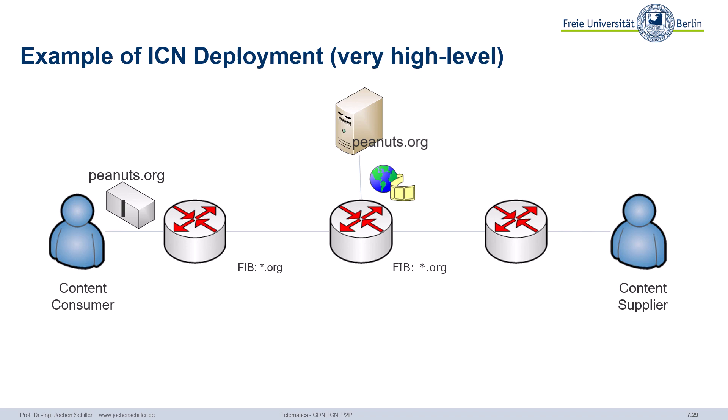These content routers know where to get the content, or which interface to use. So in our example, one router knows: I get the content here over this interface. Another router knows: if someone asks for 'whatever.org', use this interface. So the consumer requests data by name, and the consumer wants to know something about 'peanuts.org' — this is called an interest.